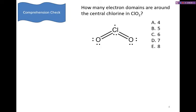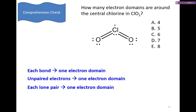How many electron domains are around the central chlorine in ClO2? The answer is four. For each bond there is an electron domain — it doesn't matter whether it's a single or double bond. For each unpaired electron, that's an electron domain. For each lone pair, that's an electron domain. So the answer is four.